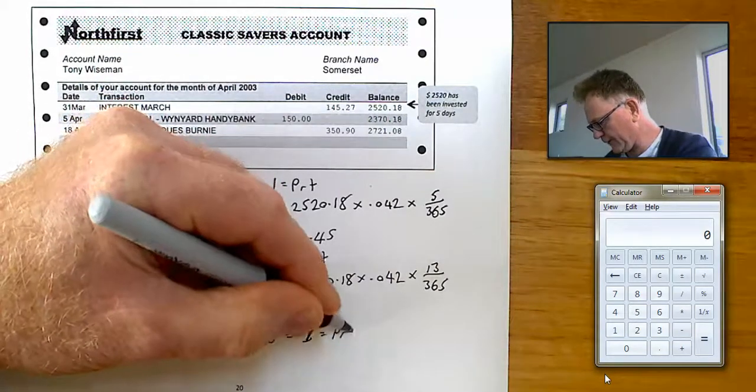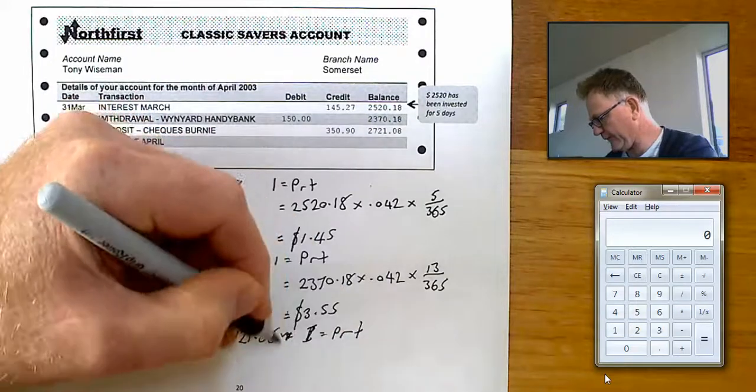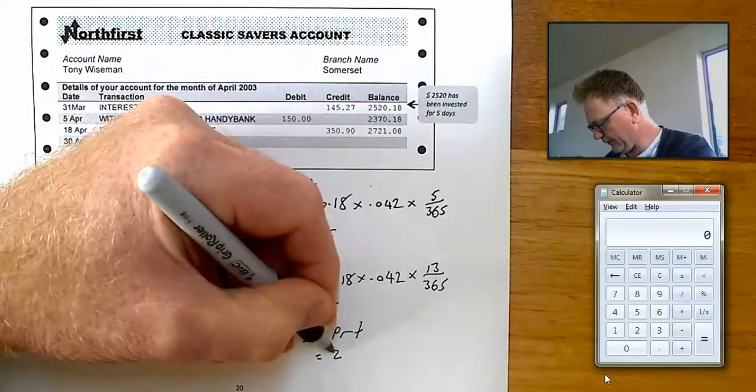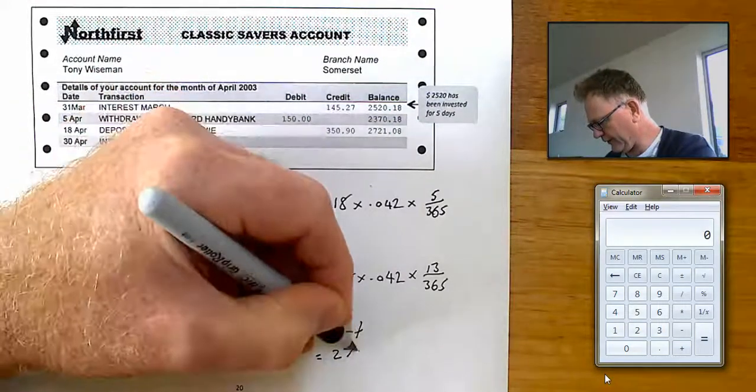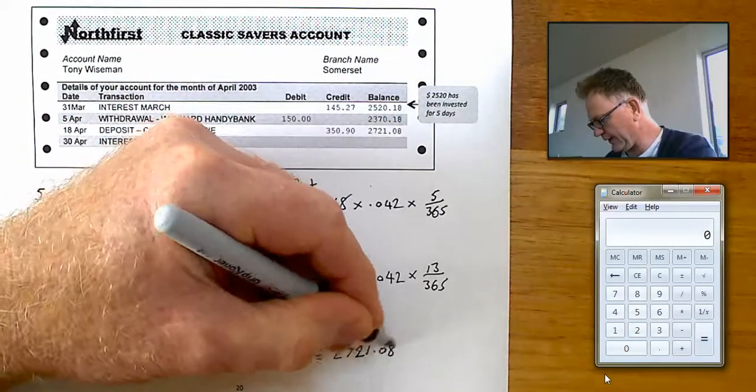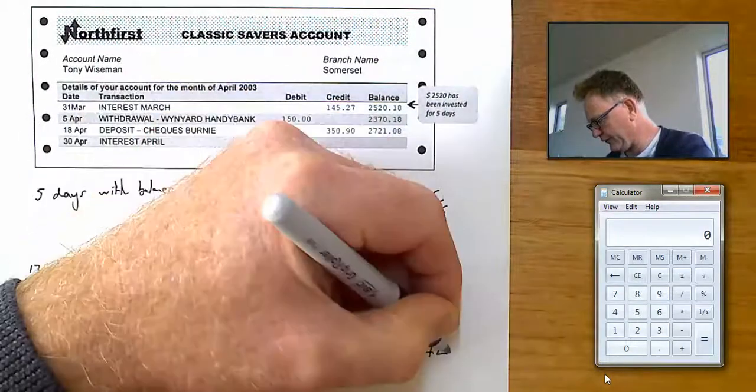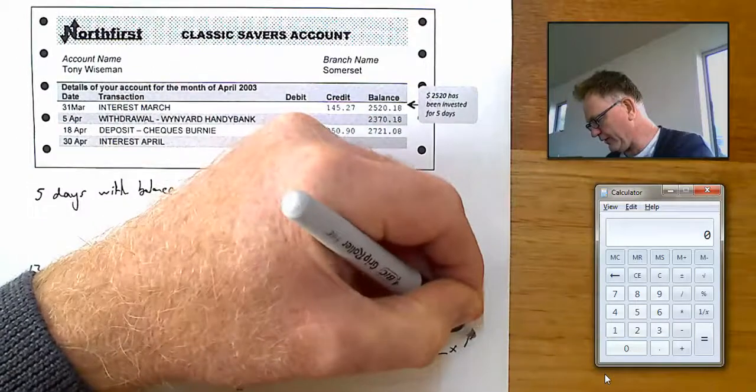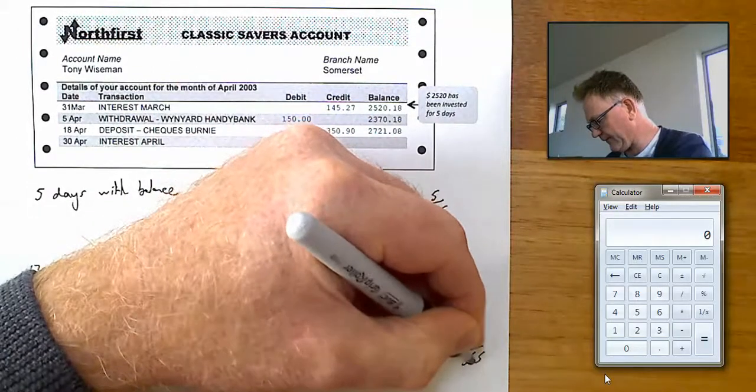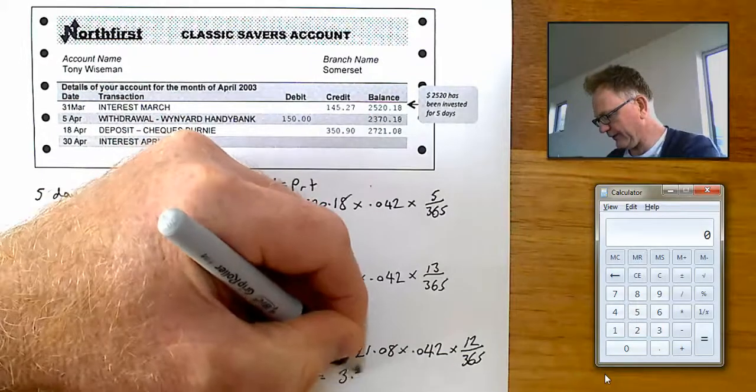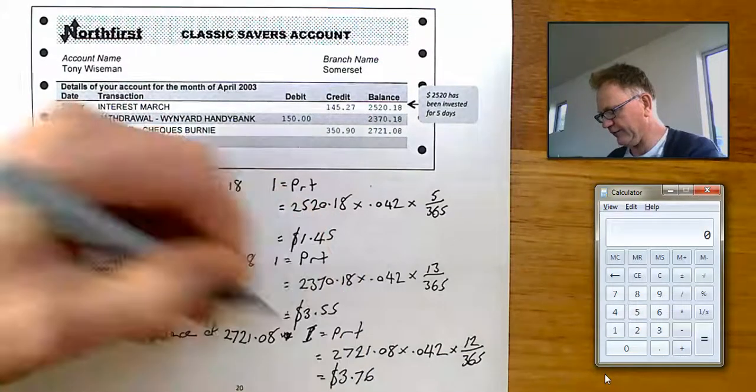I=PRT again. We're going to work out the amount of interest. With a balance of $2,721.08. Interest rate .042 for 12 days. Turns out $3.76 interest if you do the calculations.